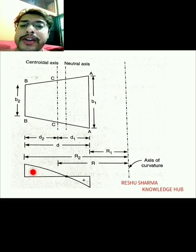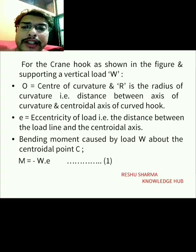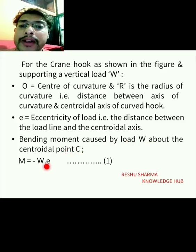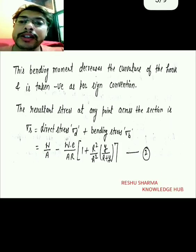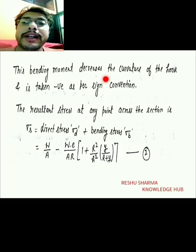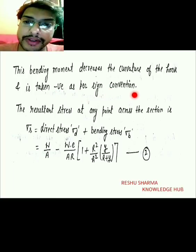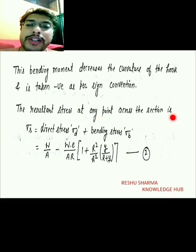Now we will find out the bending moment caused by load W about the centroidal point C. This comes out to be M equals minus W times e. This bending moment decreases the curvature of the hook and is taken as negative as per sign conventions.